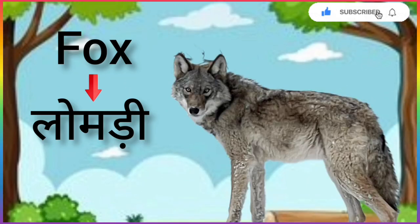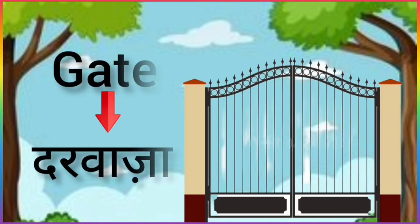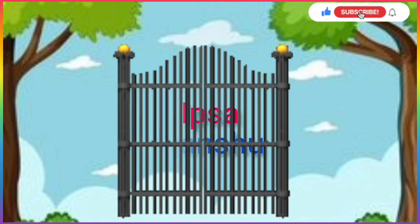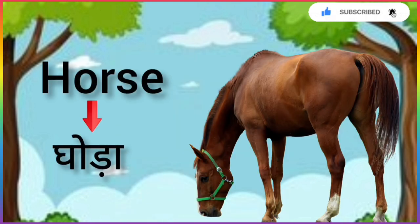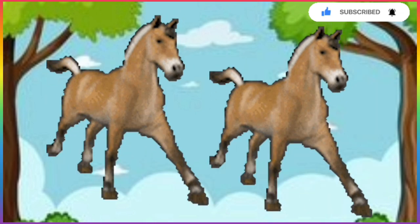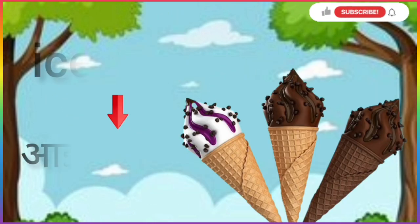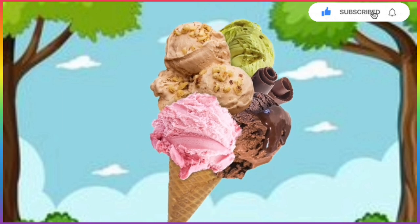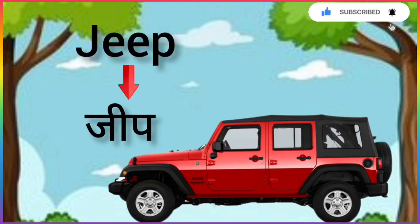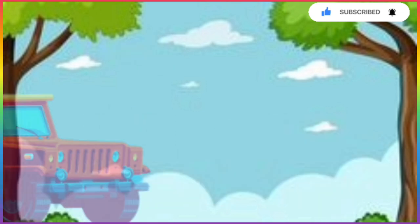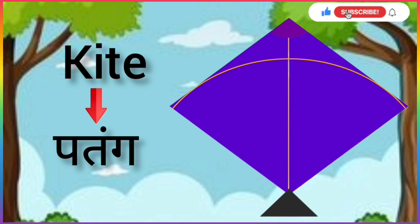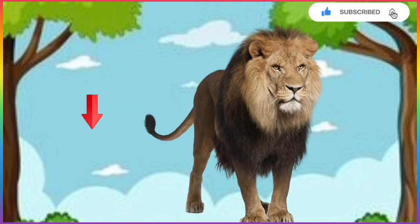E for Eagle, Eagle means Garud. F for Fox, Fox means Lombri. G for Gate, Gate means Darwaja. H for Horse, Horse means Gora. I for Ice Cream, Ice Cream means Ice Cream. J for Jeep, Jeep means Jeep. K for Kite, Kite means Patank.